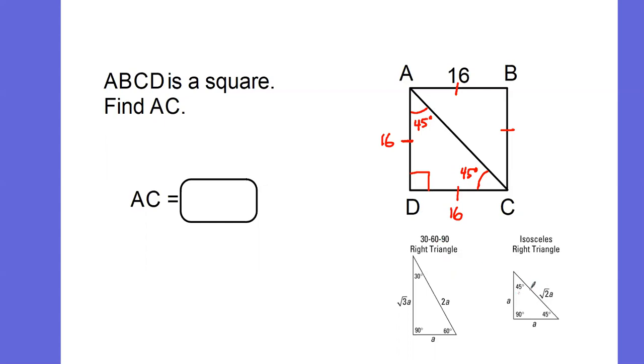Going back to our properties, whatever my side is across from my 45, I'm going to multiply that by the square root of 2 to get my side that is my hypotenuse, or my side across from my 90 degree angle.